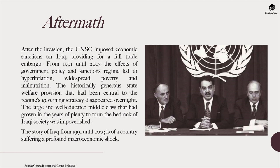In the aftermath of the Gulf War, the UN Security Council imposed economic sanctions on Iraq, providing for a full trade embargo from 1991 until 2003. The effects of government policy and the sanctions regime led to hyperinflation, widespread poverty, and in some extreme cases malnutrition. The historically generous state welfare provision that had been central to the regime's governing strategy disappeared virtually overnight, and the large and well-educated Iraqi middle class became impoverished. The story of Iraq from 1991 to 2003 is of a country which suffered a profound macroeconomic shock.